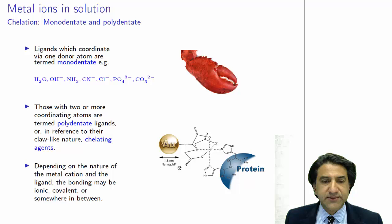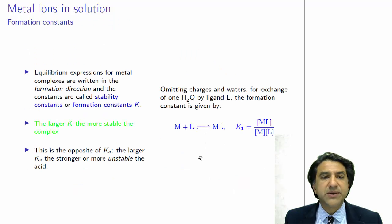So these are called chelating agents. And depending on the nature of the metal cation and the nature of the ligand, these bonds can vary anything from being ionic, so very strong, to covalent, so shared, and to something very weak indeed. It depends, really depends on the type of ligand you're talking about.